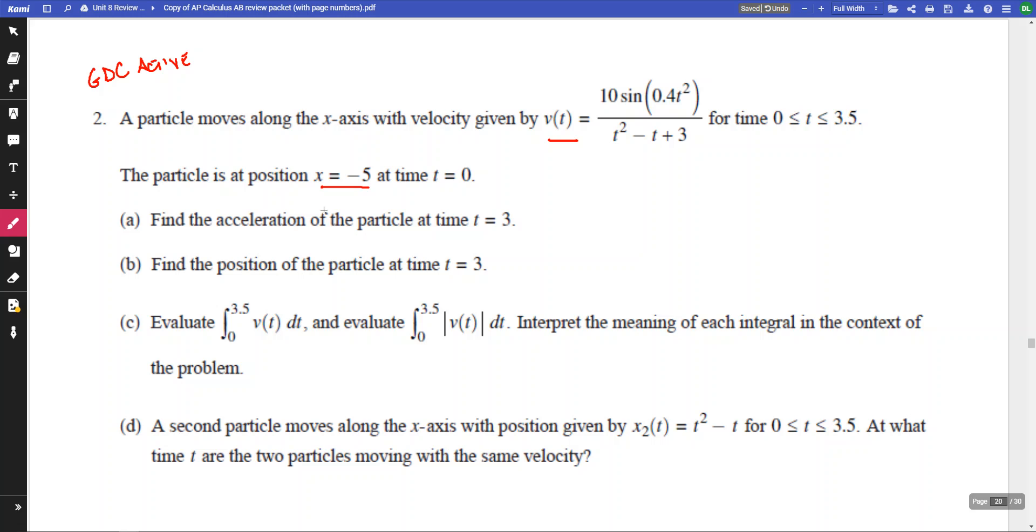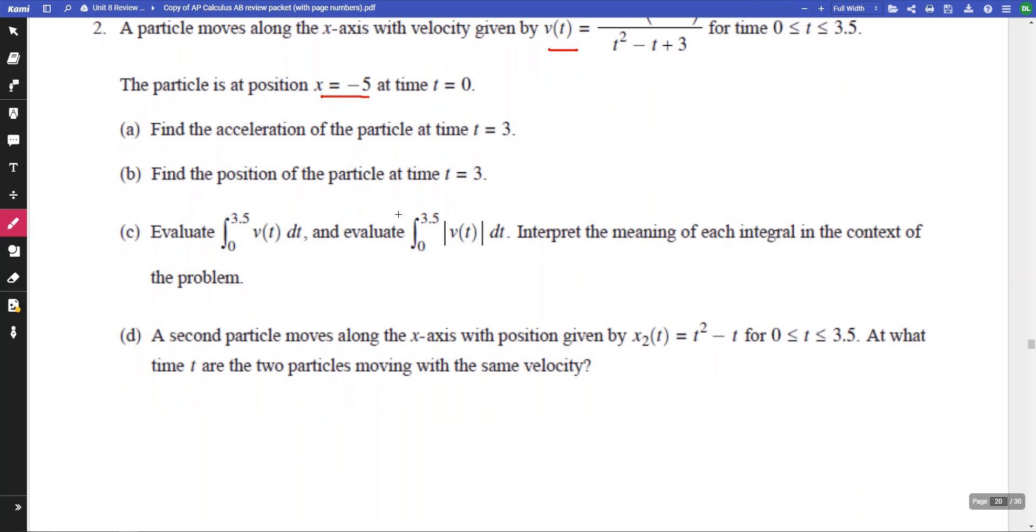Okay, so we are then asked, what is the acceleration of the particle at time t equals 3? Well, for part A, hopefully we're okay that the acceleration at time t equals 3, so the acceleration at 3 is going to be the derivative of the velocity at 3.